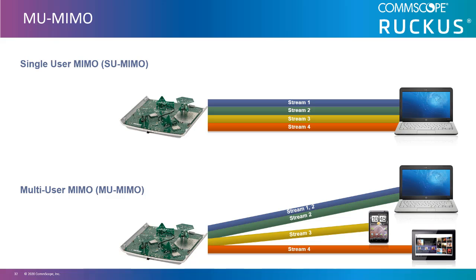In OFDMA, devices are getting different chunks of the spectrum which are divided up into resource units or RU tones. Multi-user MIMO is very different than the multi-user aspect of OFDMA. However, OFDMA and multi-user MIMO theoretically can be used in conjunction when an 802.11ax device and AP are in operation.